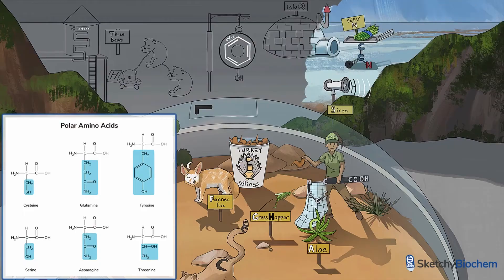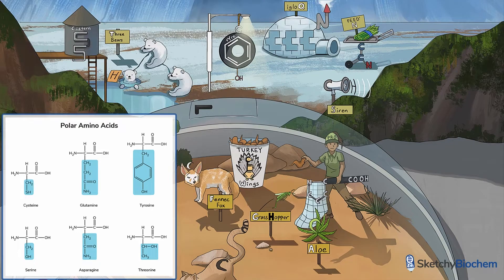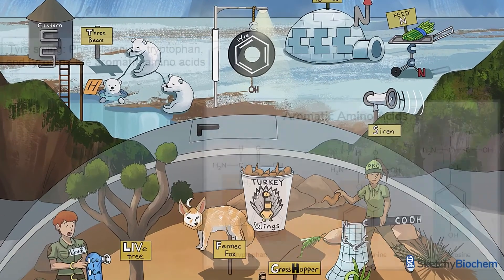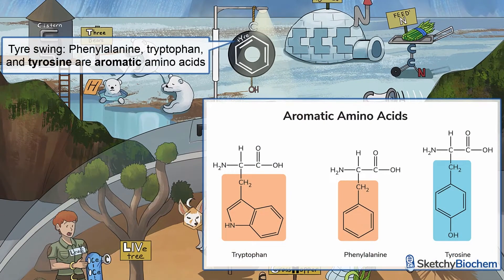Bundle up your britches, because we're heading to the North Pole. The polar amino acids have an uneven distribution of charge throughout their atoms. The polar amino acids are depicted as follows: the tyrosine tire swing, threonine bears, and for the cubs, asparagine asparaguses — asparagi? You get the point. We also have the serine siren, a cysteine cistern, and a glutamine igloo, or iglutamine. That tire swing is tyrosine, the final of the three aromatic amino acids.